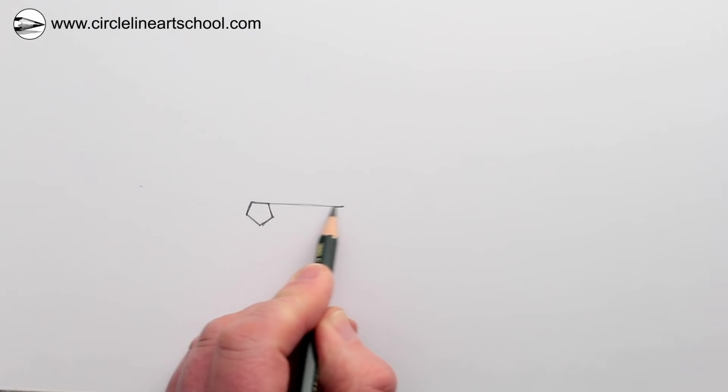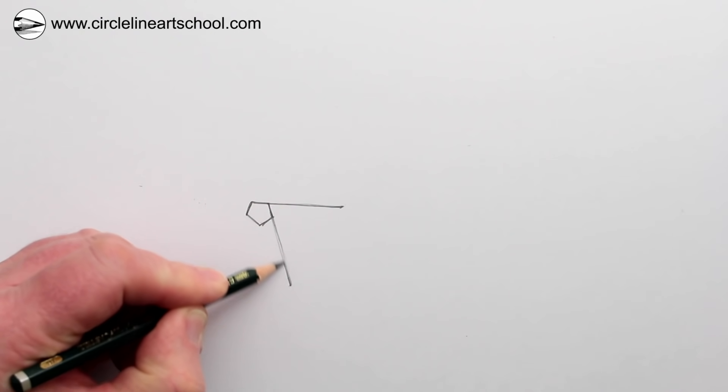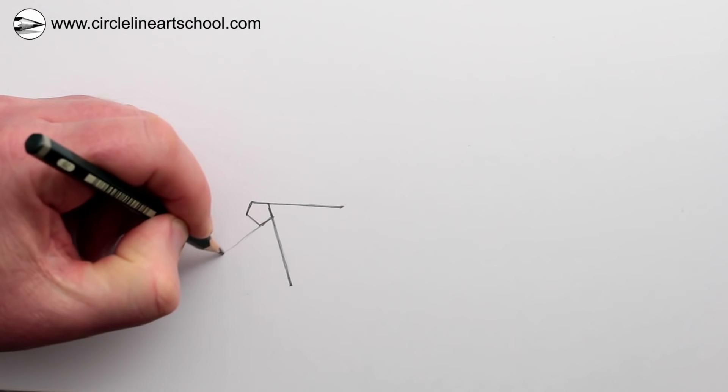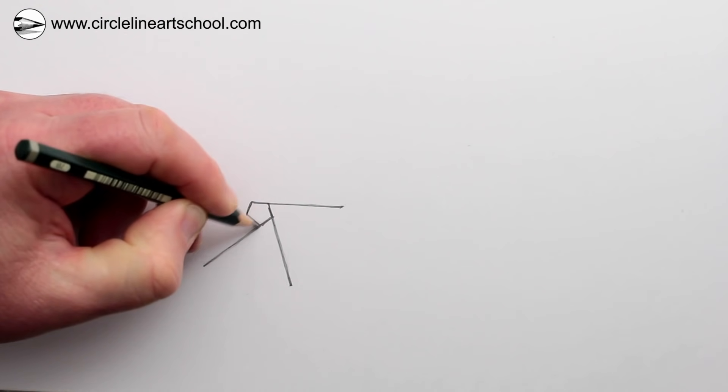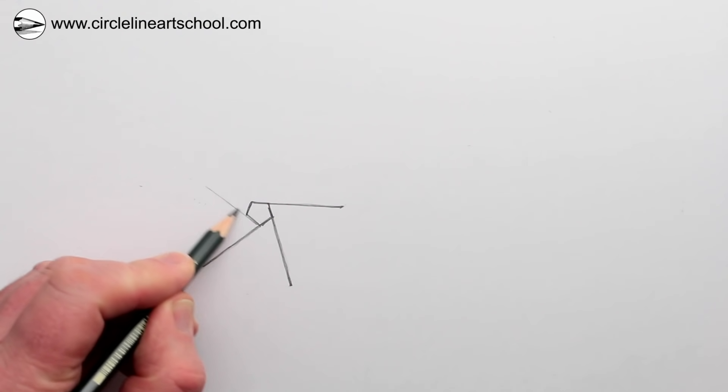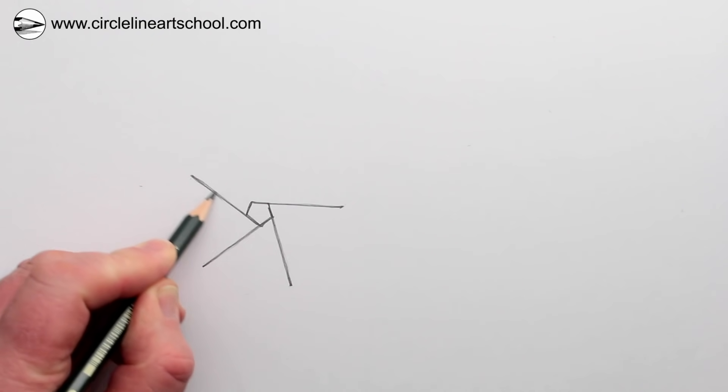Next we can extend the lines of the pentagon, starting with extending the top horizontal line to the right. Now we can repeat this process four more times, extending them to the same length, so that we have five lines extending from the five sides of the pentagon, and each of these lines is going in a clockwise direction.